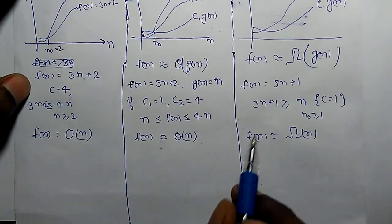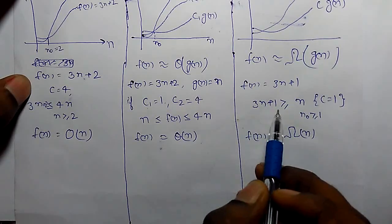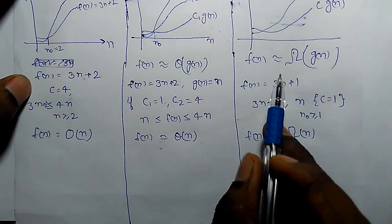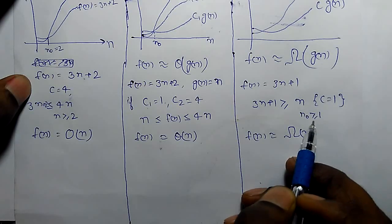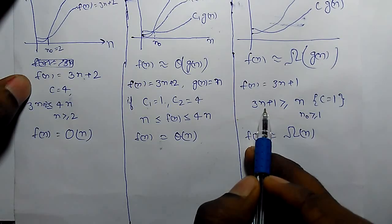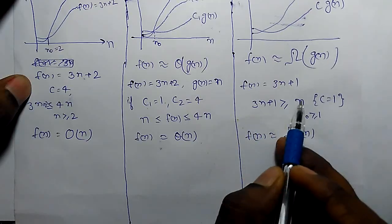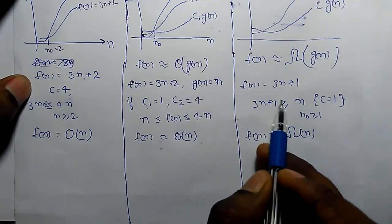If we take the example 3N plus 1, 3N plus 1 is greater than equal to, if C equals 1, it is N. N0 is greater than equal to 1. For any N greater than equal to 1, we can find this condition true.